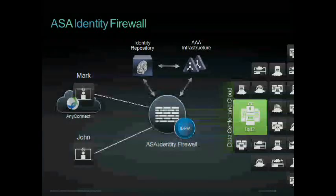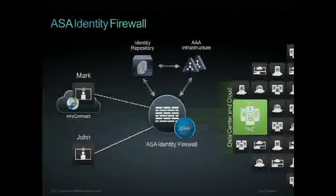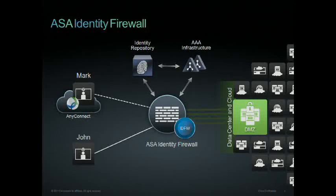The Active Directory agent retrieves the user's IP information from the directory, and the ASA retrieves the IP-to-user mapping from the directory agent. The ASA then permits or denies the traffic based on the established policy.